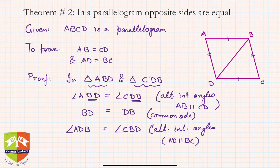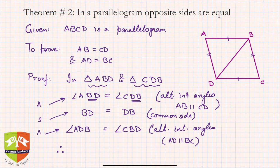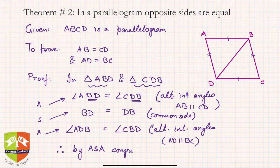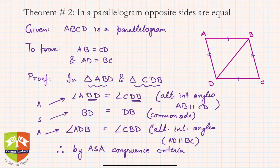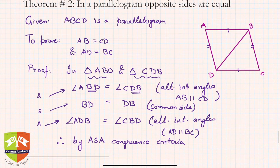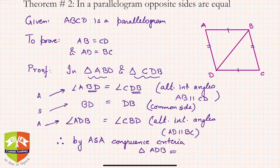Therefore, tell me which criteria of congruence did you just use? It is nothing but Angle-Side-Angle (ASA). Therefore, by ASA congruence criteria, triangle ABD is congruent to triangle CDB.